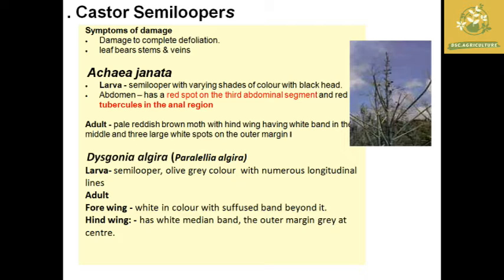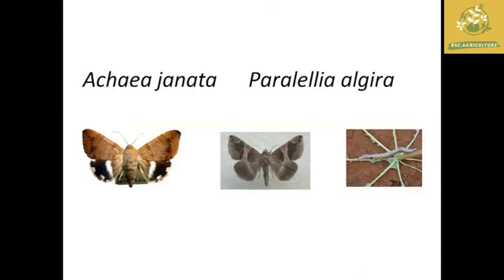In addition, Dyskonia algera is also a semi-looper larvae, but olive green in color. In the larvae, there are numerous longitudinal lines. The adult has four wings of white-ink color with a white band on the outer margin and a gray center. These are the distinguishing characteristics of Acchia Janata and Dyskonia algera.